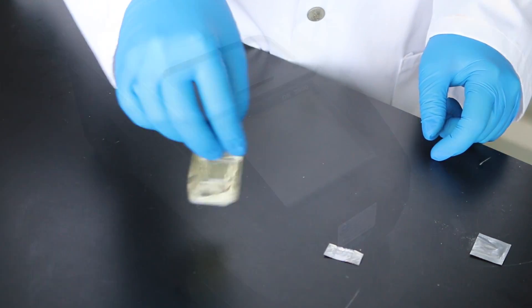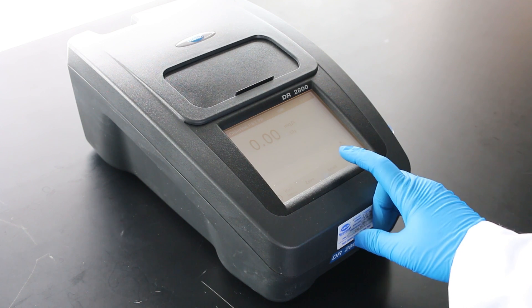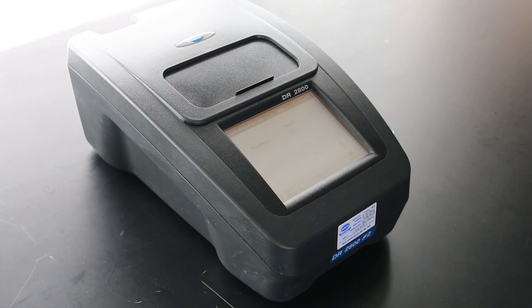If the sample is over range, it must be diluted and the test must be repeated, or another method may be available to measure the sample without dilution.